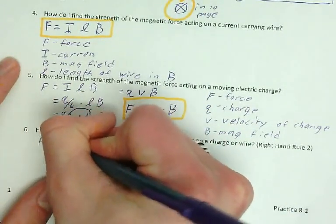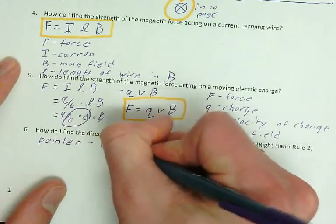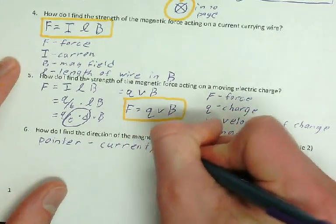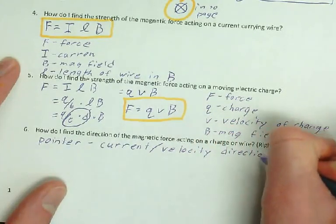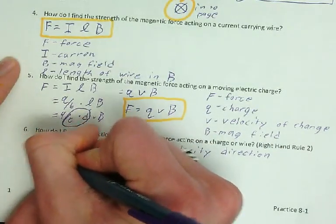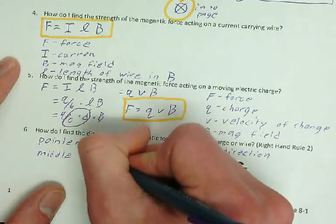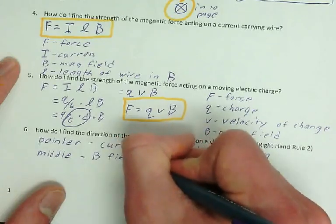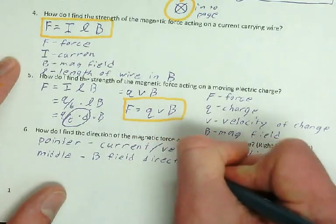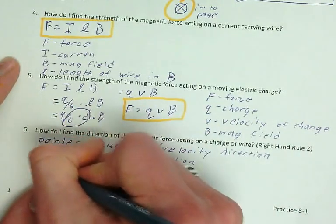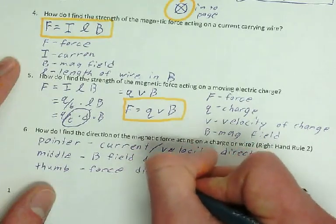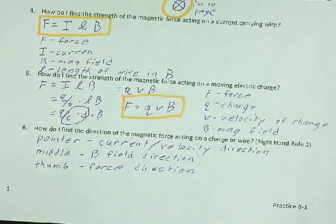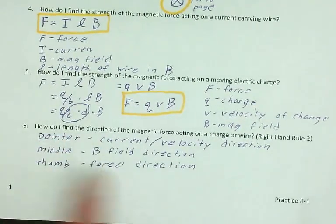So here's what each of the fingers represent. So your pointer finger represents the current or the charge's velocity. So it's the current slash velocity direction. Okay? Your middle finger is the B field direction. So the magnetic field direction. And your thumb is the force direction. I don't make you memorize very many things. This thing you're going to have to memorize. You have to know what each of the fingers are. Okay? So in the meantime, while you're learning it, keep this handy so you can reference back what each finger is.